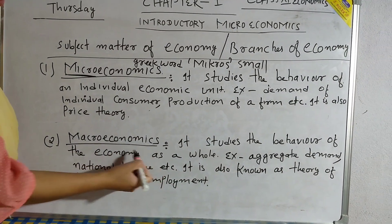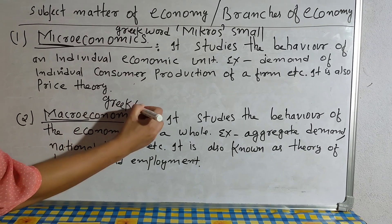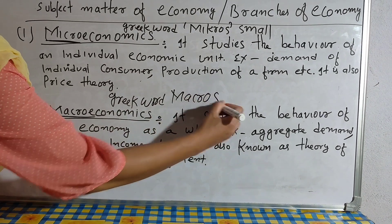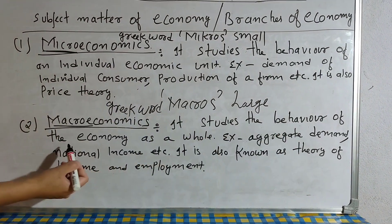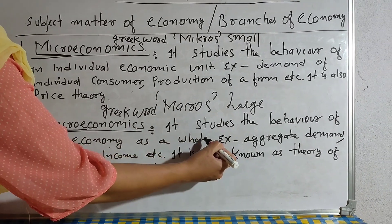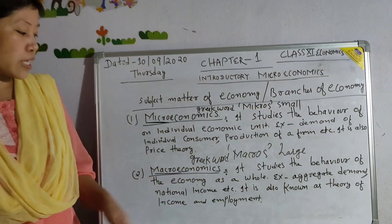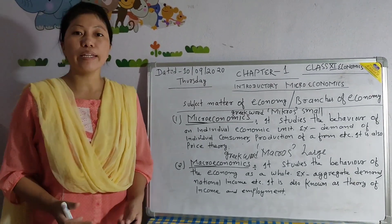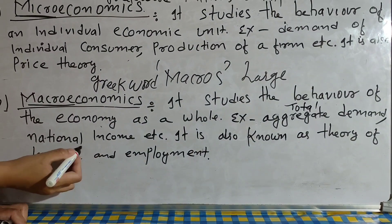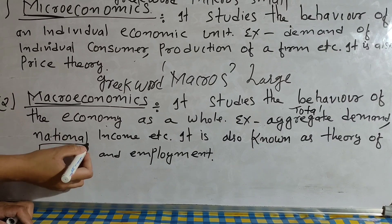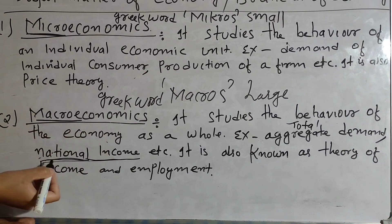Now come to macroeconomics. The word macro is also derived from the Greek word makros, which means large. That is why it studies the behavior of the economy as a whole. For example, aggregate demand and national income. Aggregate demand means total demand of a country. National income is derived from the nation — meaning the total income of the country. This all comes under macroeconomics.